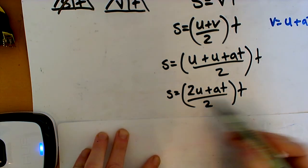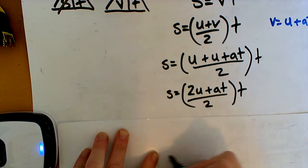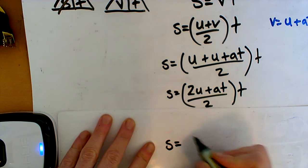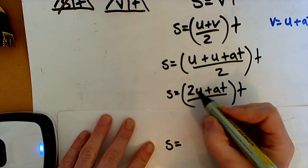So now we just have to get rid of these brackets. Okay, so we're going to do S is equal to. And we're going to get rid of this bracket. So we're going to have to multiply our T in. So we'll multiply it up to the top here. So you're going to have 2UT,